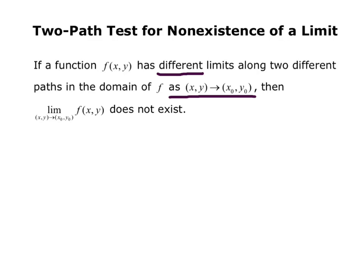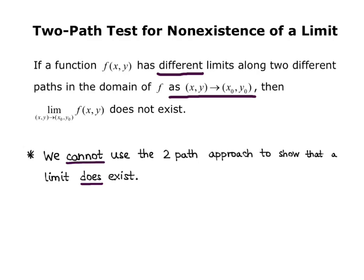Also, you want to make a note that we cannot use the two-path approach to show that a limit does exist. Just because you find two paths that do give the same limit does not mean necessarily that the limit exists.